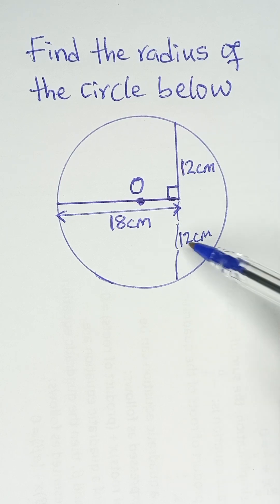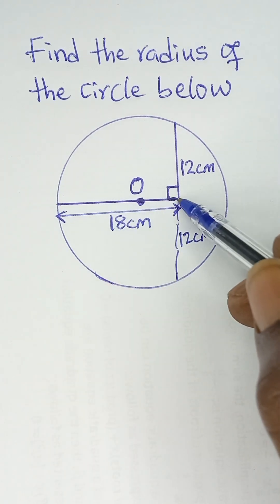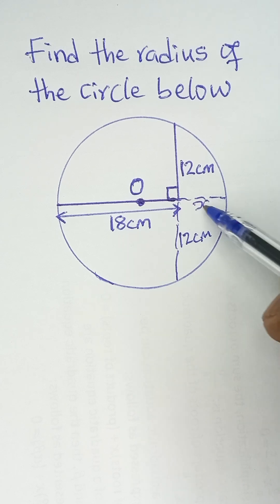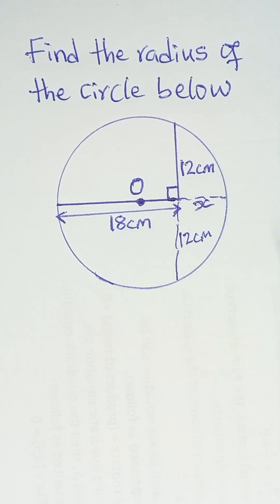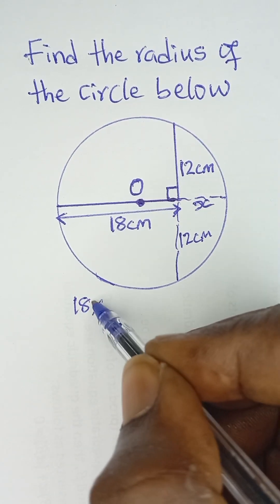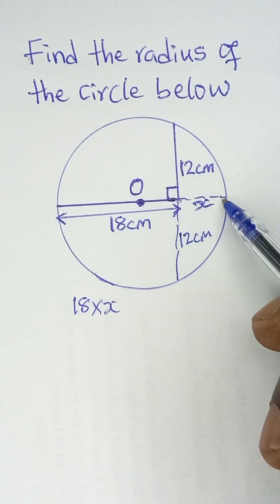So if this is 12, this is also 12, dividing it into two parts. Now if we complete this diameter to the end of the circle, we can take this portion as x. So by intersecting chord theorem, 18 multiplied by x...